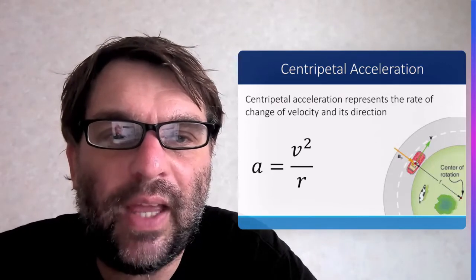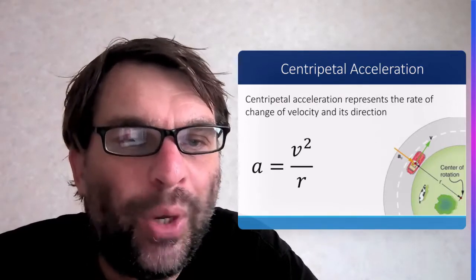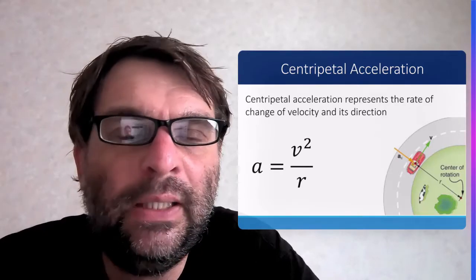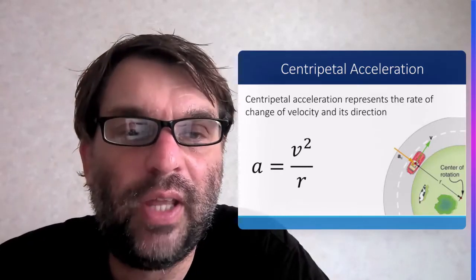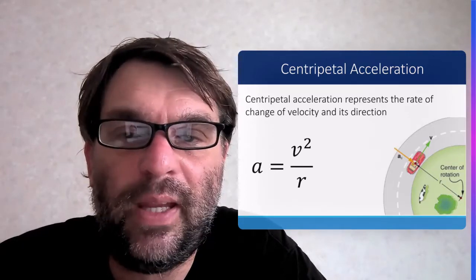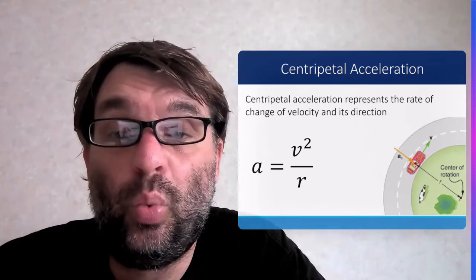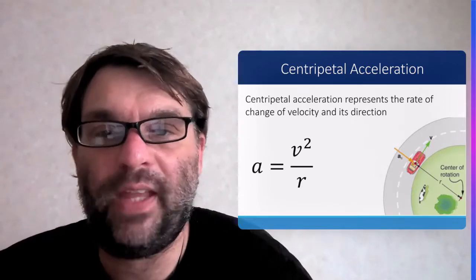So you can see that little vehicle there going around a corner. We've got a radius to the center of that corner, a tangential velocity to that corner, and there's going to be a centripetal acceleration towards the center of that curve.